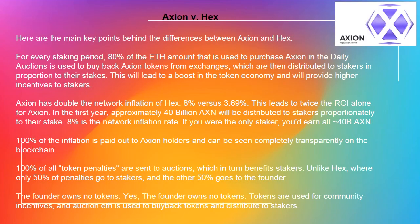Axion vs HEX. Here are the main key points behind the differences between Axion and HEX. For every staking period, 80% of the ETH amount that is used to purchase Axion in the daily auctions is used to buy back Axion tokens from exchanges, which are then distributed to stakers in proportion to their stakes. This will lead to a boost in the token economy and will provide higher incentives to stakers.